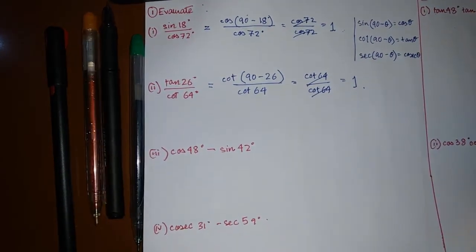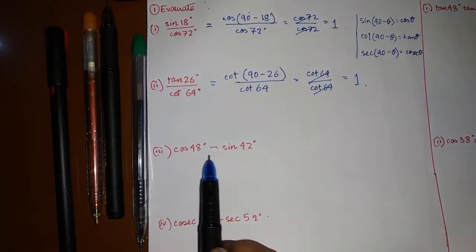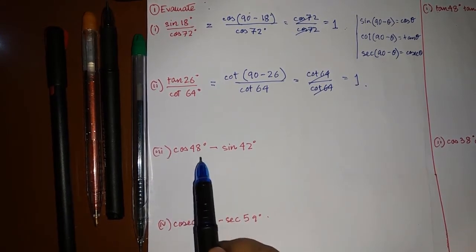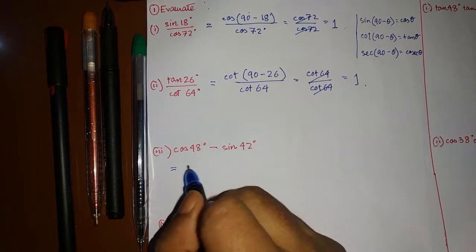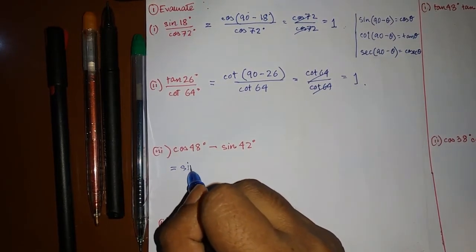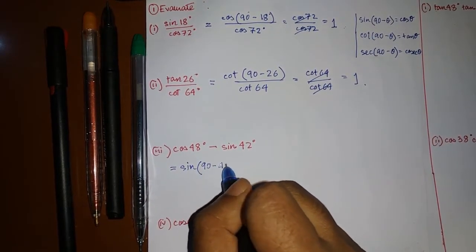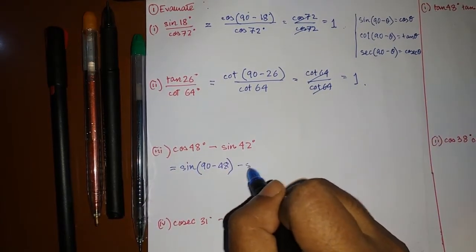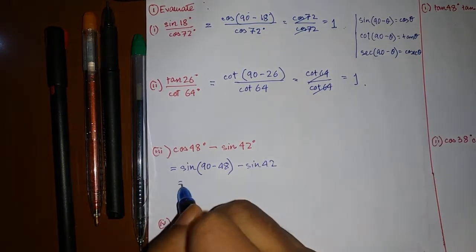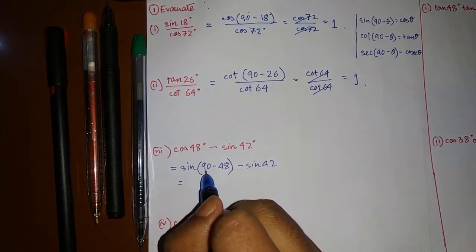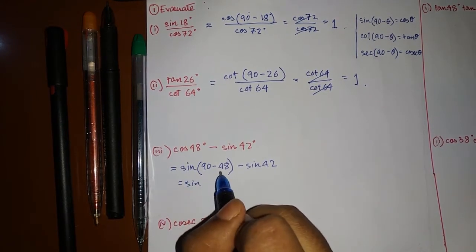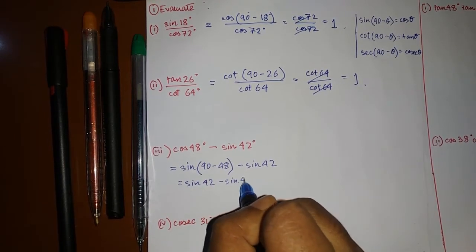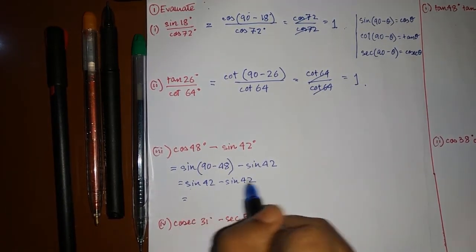Now let's move on to the third one: cos 48° − sin 42°. Convert cos 48° into sin: sin(90° − 48°) = sin 42°. So we get sin 42° − sin 42°, and the answer will be 0.